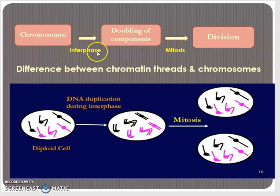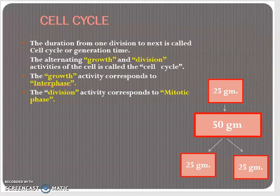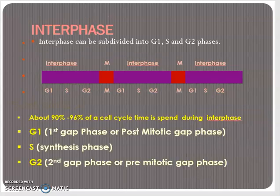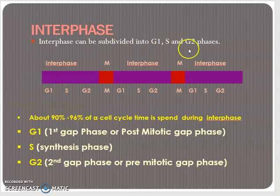The doubling of ingredients takes place in a step known as interphase, and the division takes place in a step called mitosis. The alternating growth and division activity of a cell is called the cell cycle. The growth corresponds to interphase while the division corresponds to the mitotic phase. Interphase is subdivided into three sub-stages: G1, S, and G2.